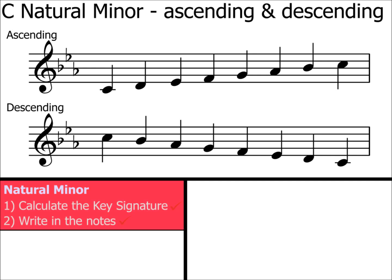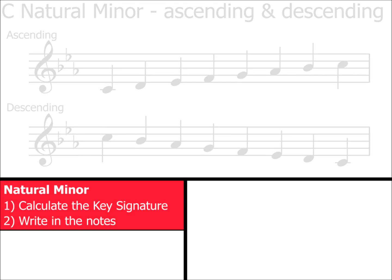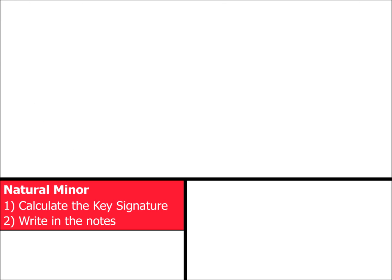Hopefully, you're now feeling confident in how to calculate natural minor scales. All you need to remember is to calculate the key signature and then ensure that there is a note on every line and space, as per my instructions at the bottom of this screen.